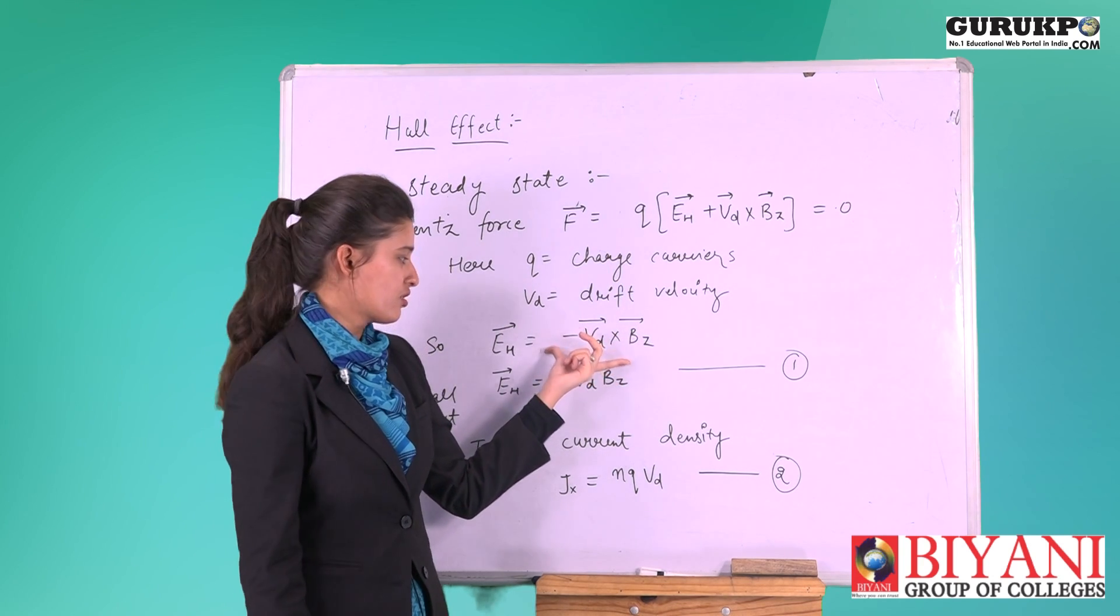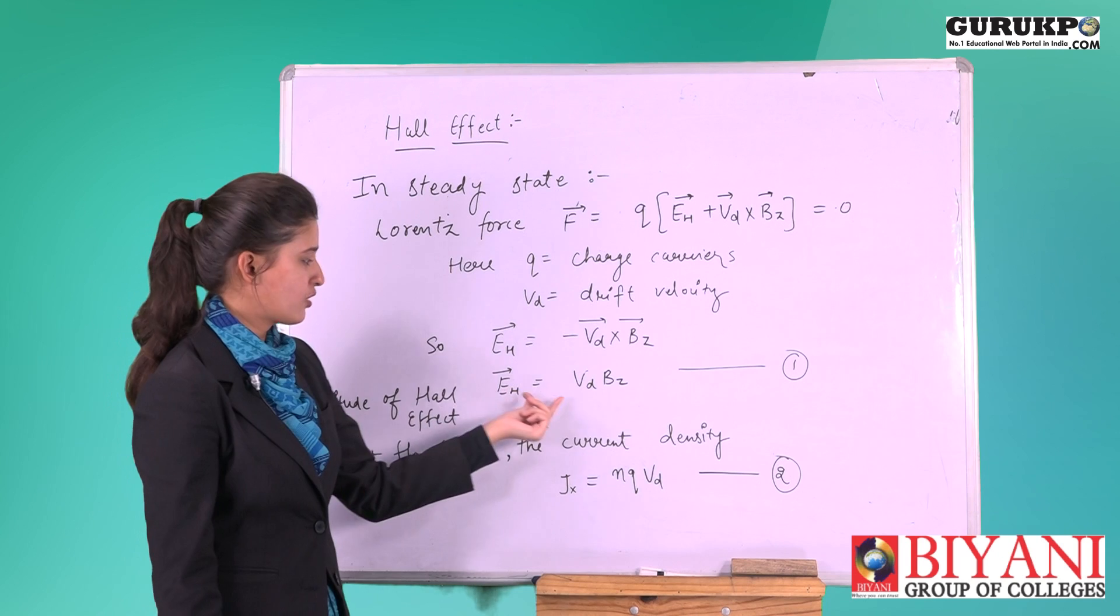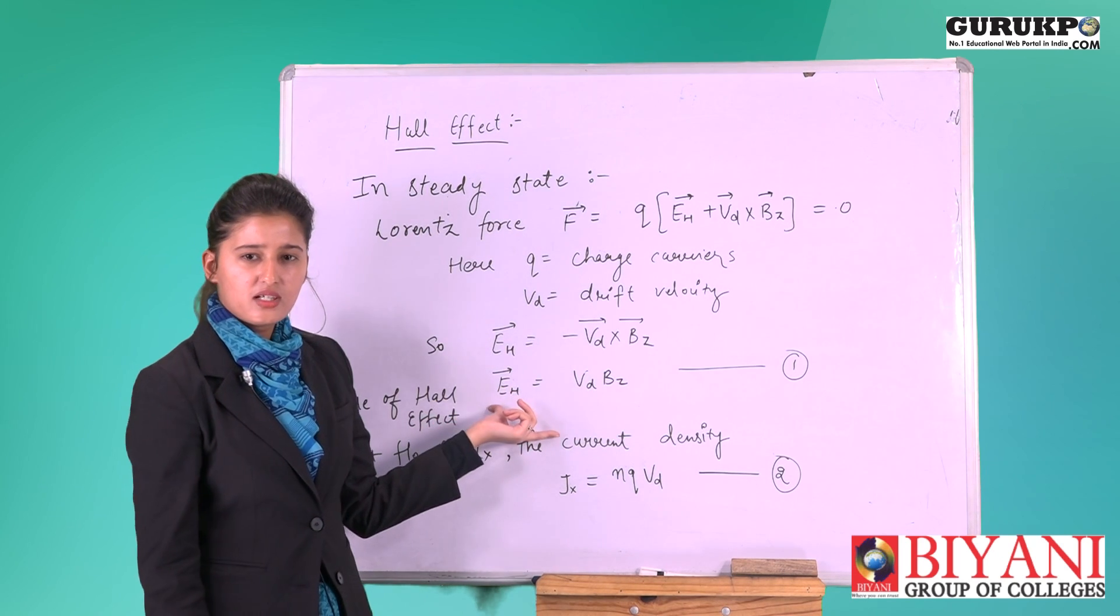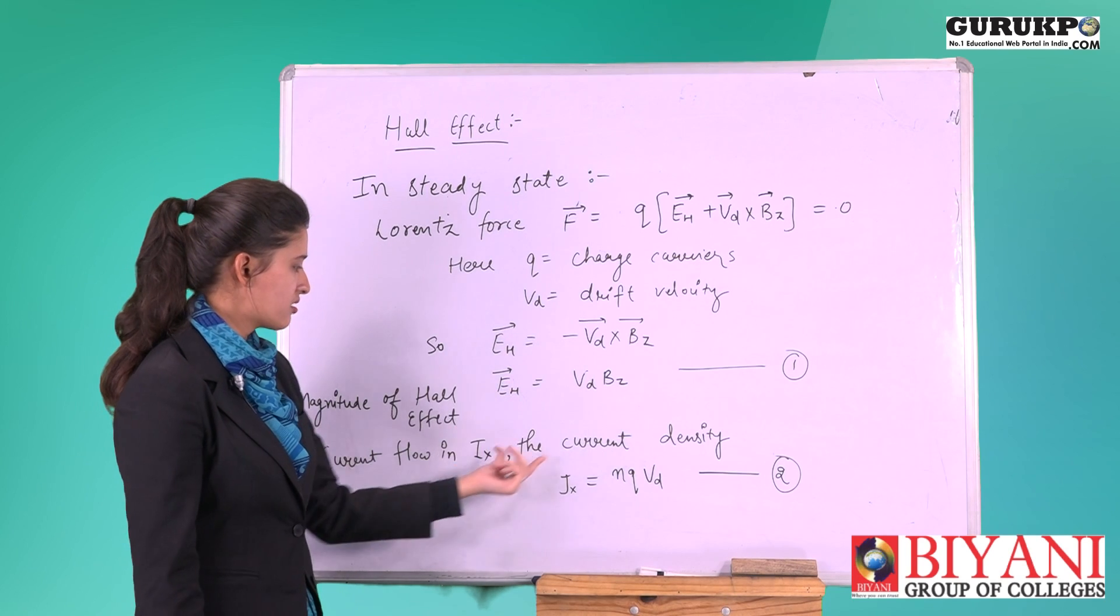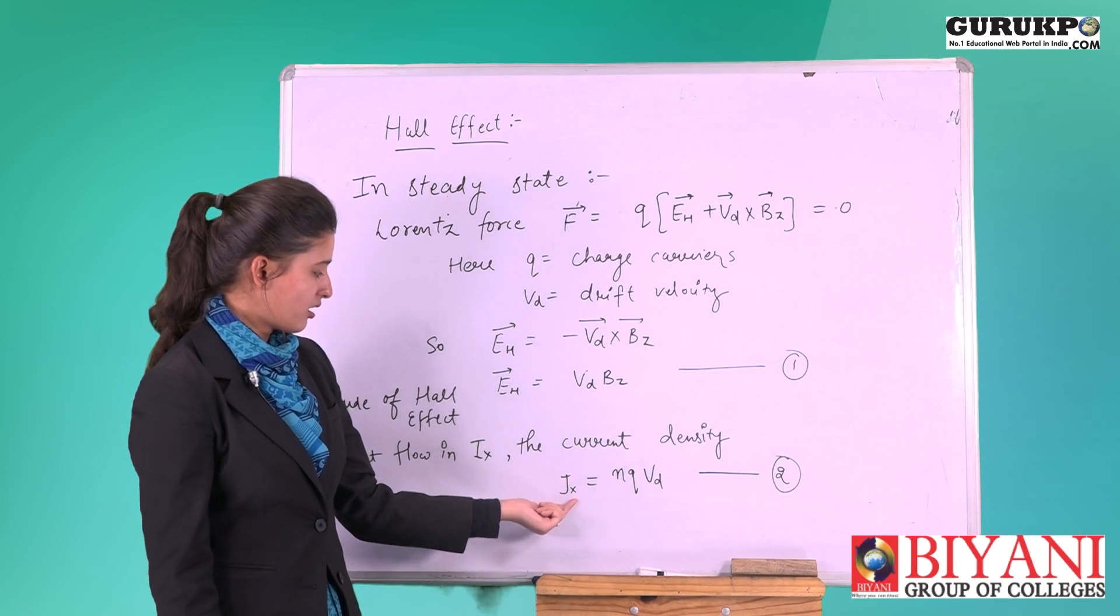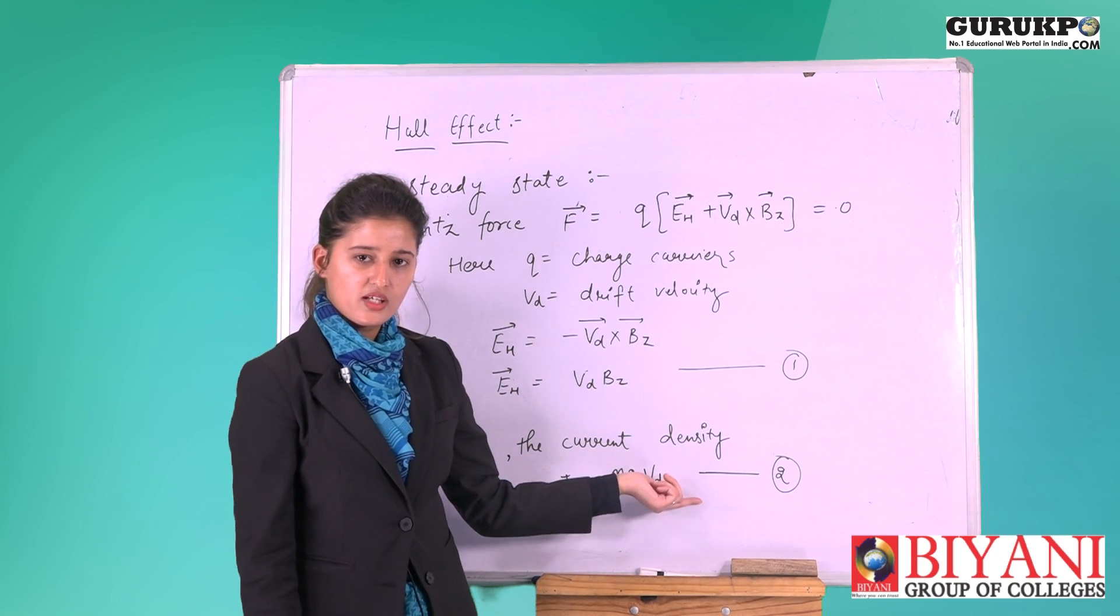Now we will take magnitude of E_h. Our equation will be E_h equal to V_d cross B_z. We know that our current is in x direction, so our current density j_x will also be in x direction. Our current density will be j_x equal to n q V_d.